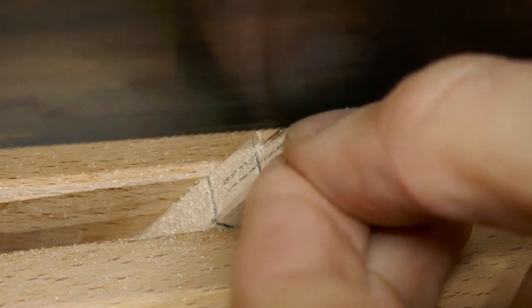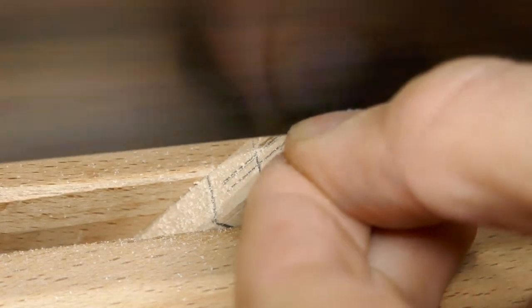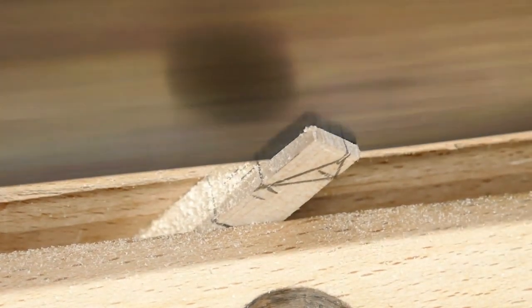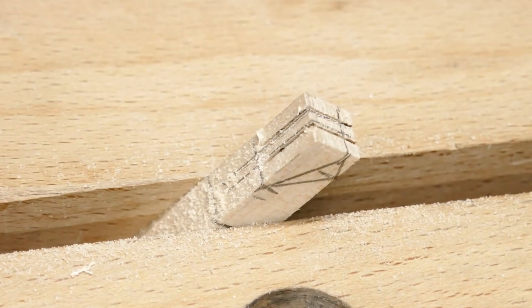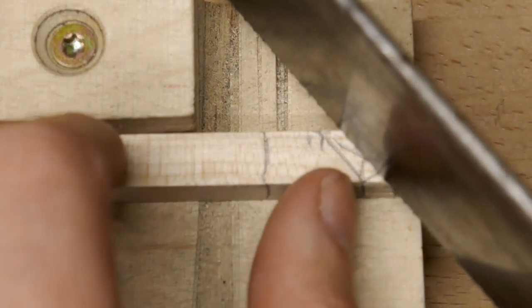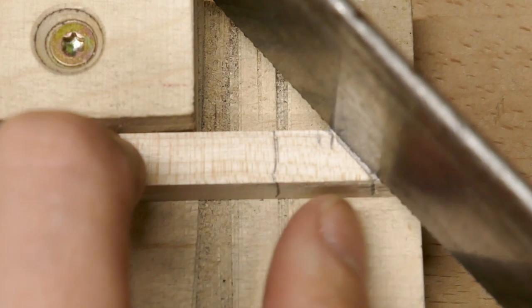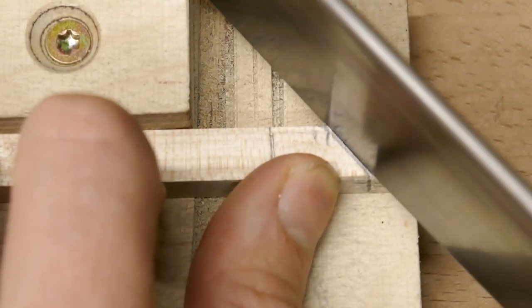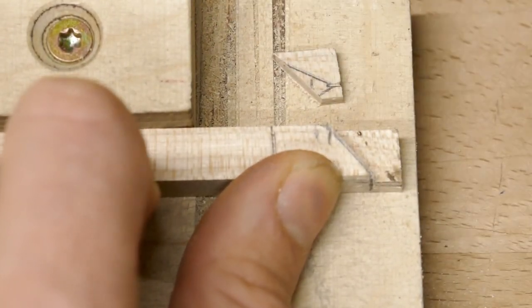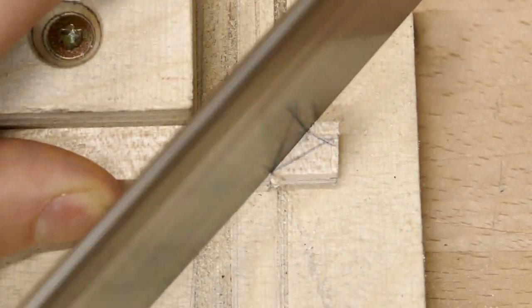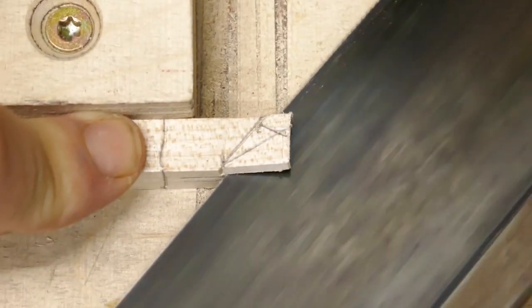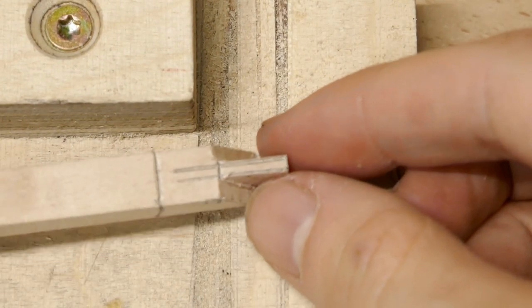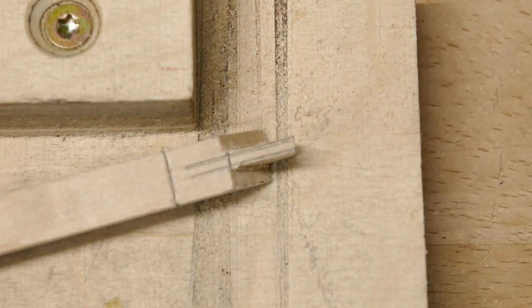And then, the second side. Now we can take the rest of the material off, again, cutting just outside of the line, especially here, down at the heel. Now we have this rough-looking heel. The shoulder's a bit uneven, but that doesn't matter, we can clean that up later.